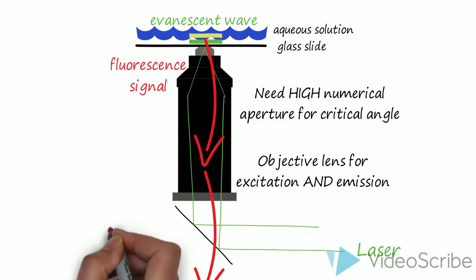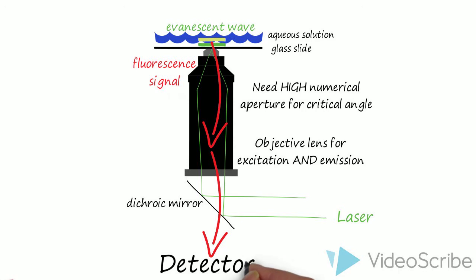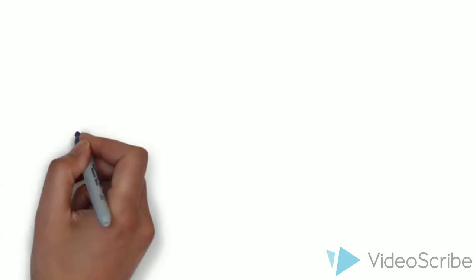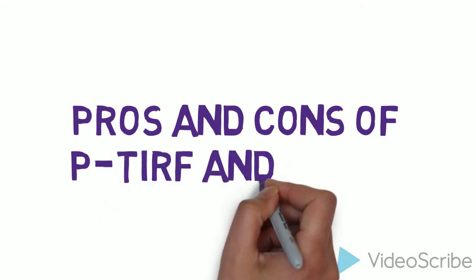The evanescent wave is generated and the fluorescent signal travels down the objective with the reflected laser light. The excitation and emission sources are separated by a dichroic mirror, allowing only the fluorescent signal to reach the detector. Both P-TIRF and O-TIRF can be used for nanoscale and single molecule imaging.